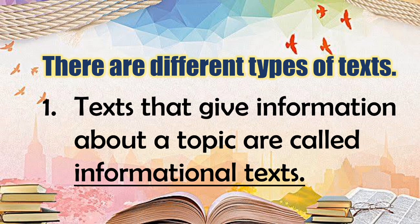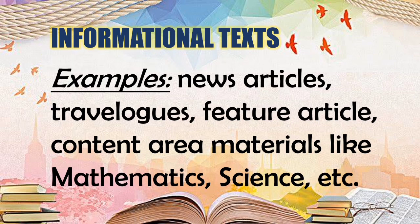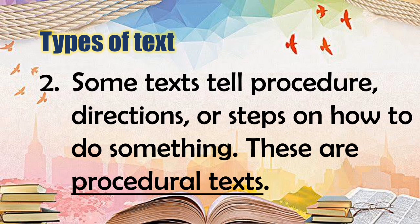From our answers we can say that there are different types of texts. The first type of text is the text that gives information about a topic, which is called informational text. Examples are news articles, travel logs, feature articles, and content area materials like mathematics, science, and so on.